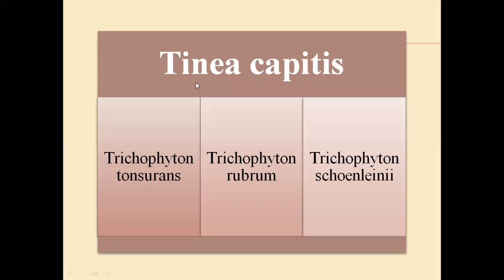Tinea capitis means that the fungal infection — the dermatophytes — is present on the head. The dermatophytes have different species; there are different classification species for the dermatophytes, and there is a separate lecture for that. For tinea capitis, which most commonly affects the head region, the species involved are Trichophyton tonsurans, Trichophyton rubrum, and Trichophyton soudanense. These three are the species of dermatophytes that most specifically affect the head region.